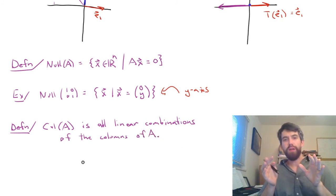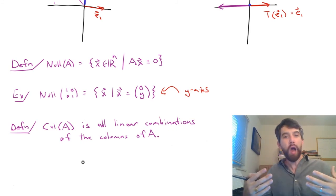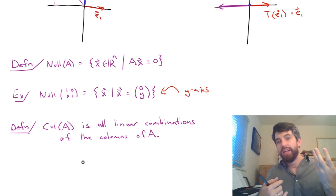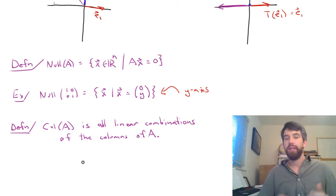I'm going to define the column space to be all linear combinations of the columns of A. Now, we might recall when we did matrix vector products that linear combinations of the columns of A were just described by the matrix A times the vector X. In other words, asking for all possible linear combinations of the columns of A is just asking for every single X, tell me all of the AXs that are out there.